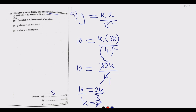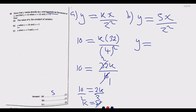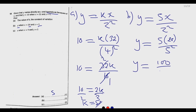For question 18b, we find y when x equals 20 and z equals 5. Using the formula with k equals 5: y equals 5 times 20 over 5 squared, which is 100 over 25, giving us y equals 4.